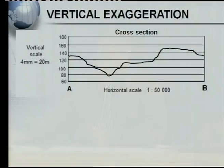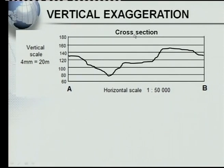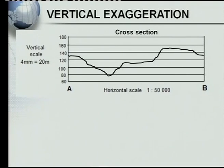So let's have a look at our vertical exaggeration. Here we've got a cross-section. Here we've got our vertical scale running that way, and our horizontal scale. As you can see, this was done on a topographical map — in other words, it was 1 to 50,000. So let's have a look at what's very, very important about your vertical exaggeration.